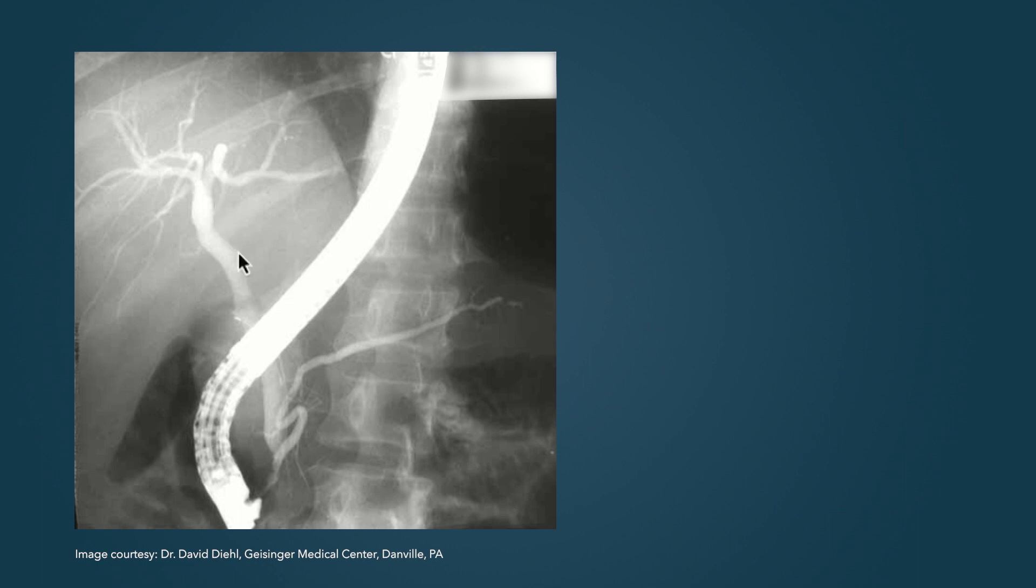Normally, a common bile duct should be about 7 millimeters in patients who have their gallbladder, and it can be up to 10 millimeters in patients who have had their gallbladder removed. Therefore, in this case, you can see it's less than 12, and this is a normal diameter.